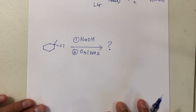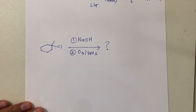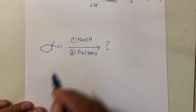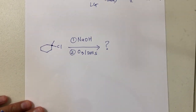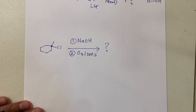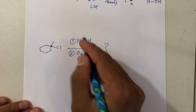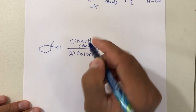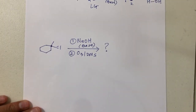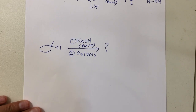Let's try a second one. You have a carbon with a leaving group. The moment I see a carbon with a leaving group, I have two choices: substitution or elimination. In this case, NaOH is written as a base, so we can limit it to elimination only. A base will do elimination; a nucleophile will do substitution.